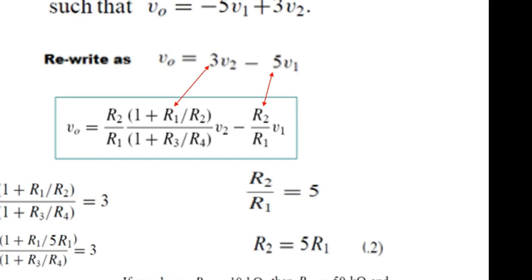So, we can assume any values. So, let's say if we assume R1 is 10 kilo, therefore R2 will become 5 times 10, that is 50 kilo. And if we assume R3 to be 20 kilo, so since R3 is equal to R4, so R4 is also 20 kilo. So, this is the design parameter for this problem.